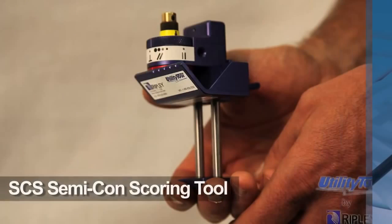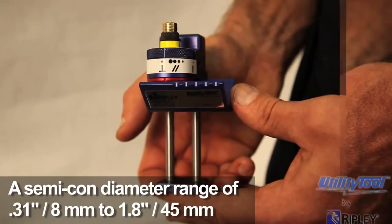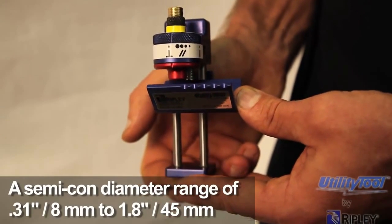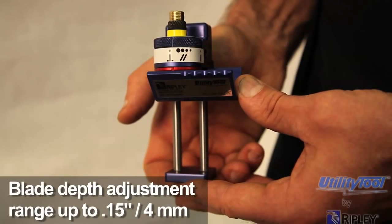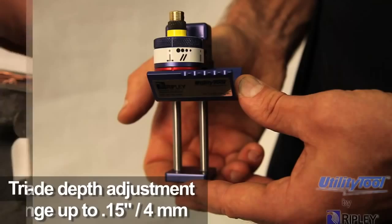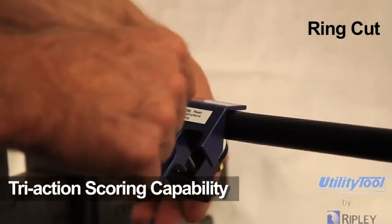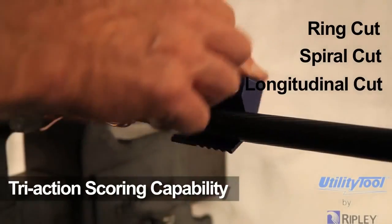The SCS Semicon scoring tool offers the following features: Semicon diameter range of 0.31 inches to 1.8 inches, a blade depth adjustment range up to 0.15 inches deep, a tri-action scoring capability to produce ring cut, spiral cut, and longitudinal cuts.